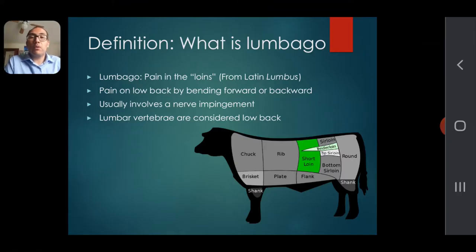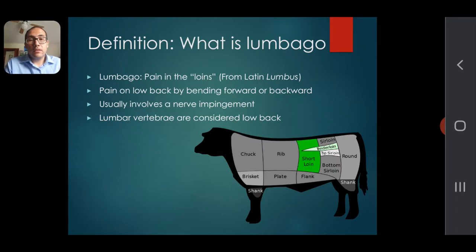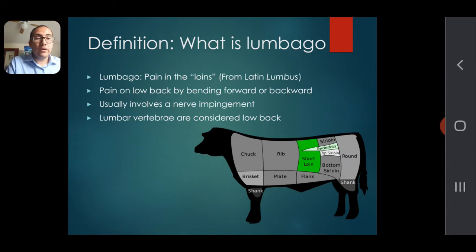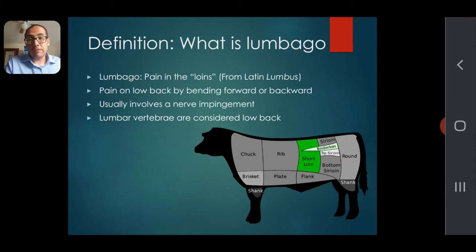Lumbago — the definition, so you understand what we're going to be talking about in this presentation. Loin is the actual word behind lumbago; it comes from the Latin 'lumbus,' meaning loin, and 'ago' means condition — so condition of the loins. You can see the picture of the cow, highlighted at the short loin, sirloin, and loin, which are basically the area equivalent to the human low back. We're talking about low back pain involving bending forward or backward, usually from a nerve impingement.